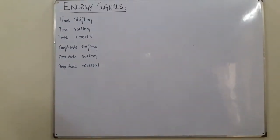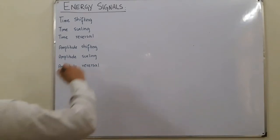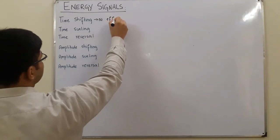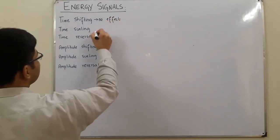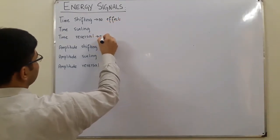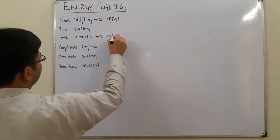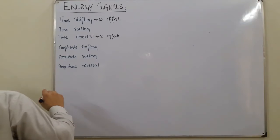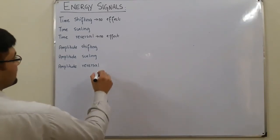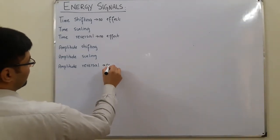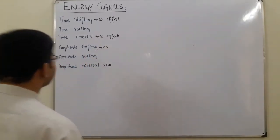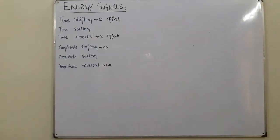The first is time shifting — it has no effect on the energy of a signal. Similarly, time reversal has no effect. Now, amplitude reversal has no effect, and similarly amplitude shifting has no effect. So only the scaling has an effect.